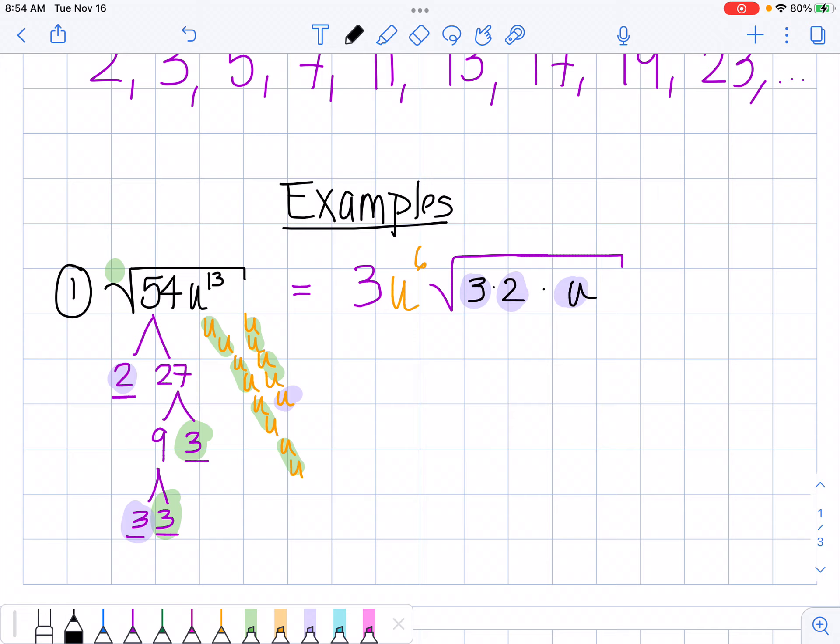So anything that's left inside my radical I'm going to multiply together. So my final answer is 3u to the 6th times the square root of 6u. Final answer. Let's try another one.